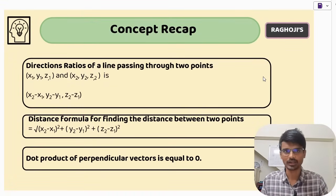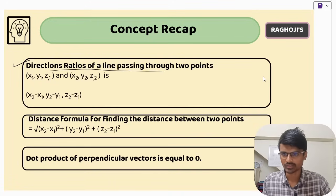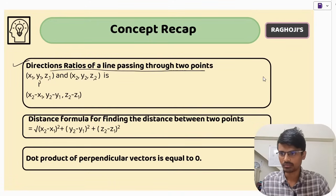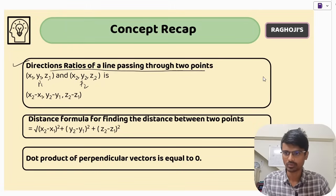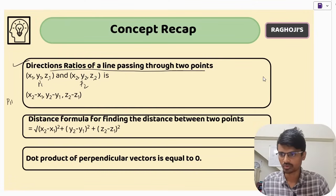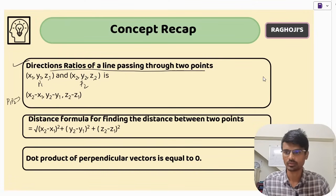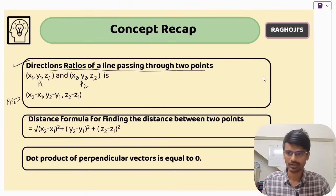First we will do a quick concept recap. The direction ratios of a line passing through two points: say you have two points P1 (x1, y1, z1) and P2 (x2, y2, z2). Then the direction ratios of line P1P2 are given by (x2 − x1, y2 − y1, z2 − z1). This should be clear to you.